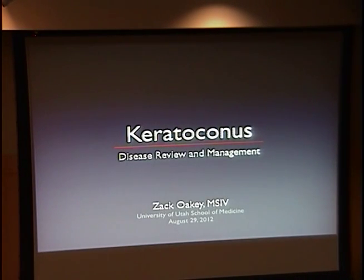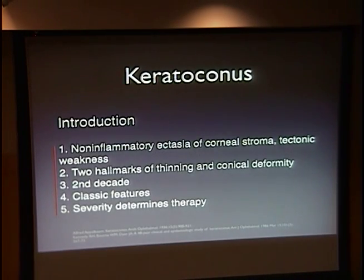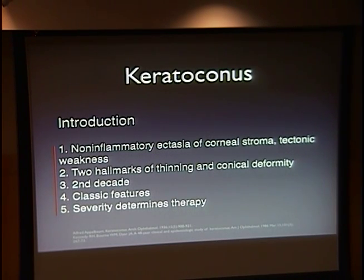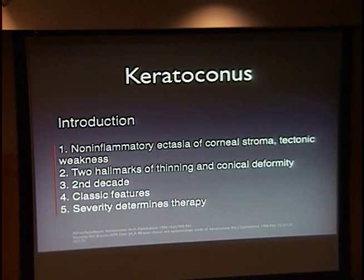Let's discuss keratoconus — the disease itself, and touch on management a little bit. Keratoconus is a non-inflammatory disorder of corneal stromal tectonic weakness. There are two hallmarks: thinning, and a conical deformity that leads to an irregular astigmatism. Typically it will present in the second or third decade, but in puberty you can actually see initial thinning associated with the disease. There are some classical features on physical exam and slit-lamp examination, and the severity of the disease will obviously determine therapy.